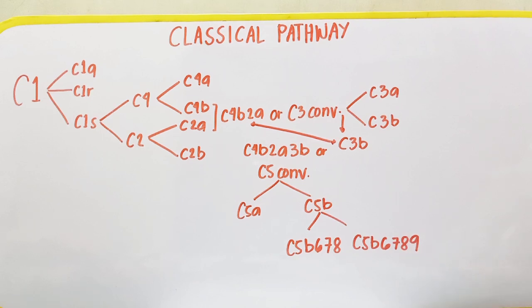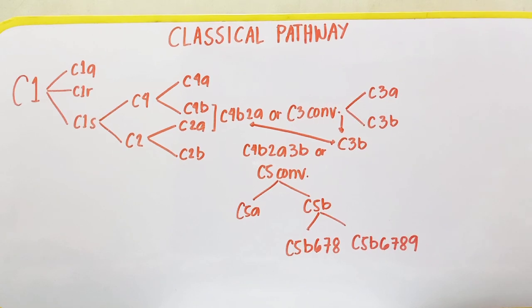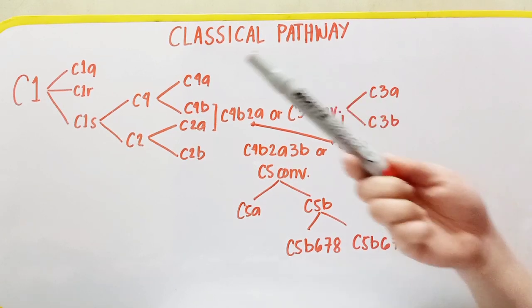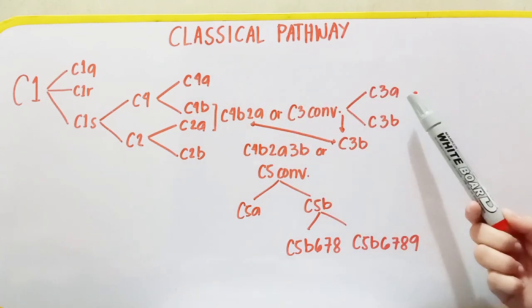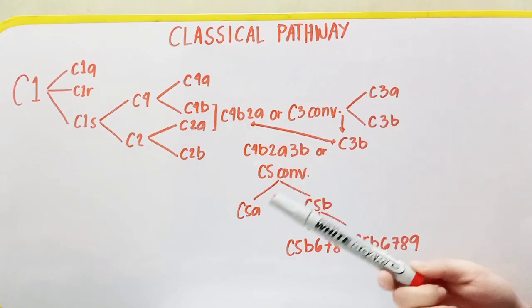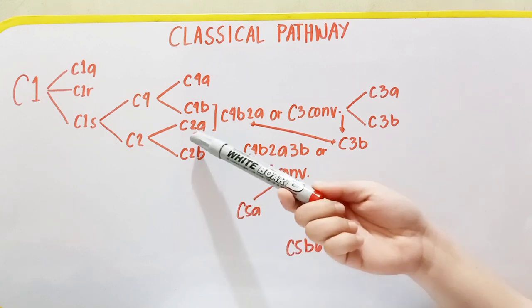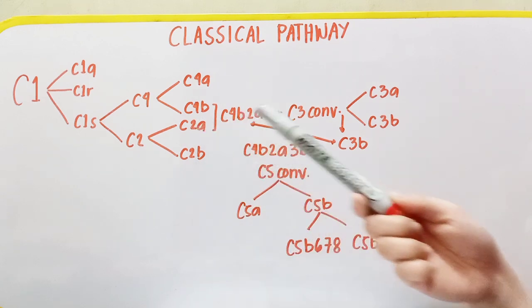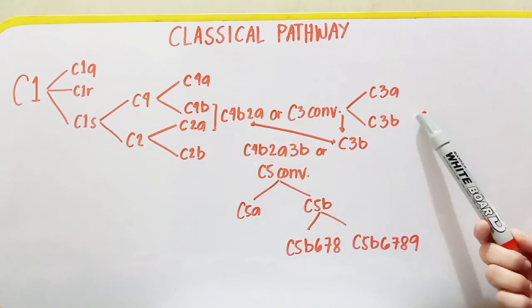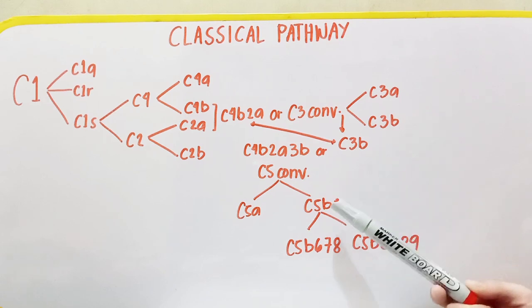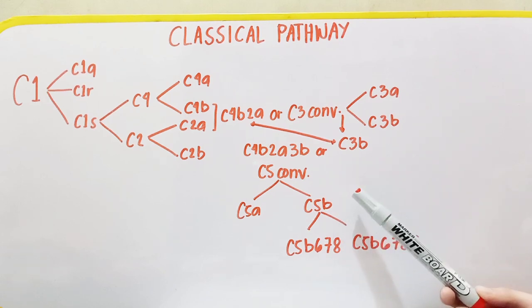To sum it up: the anaphylatoxins are C4A, C3A, and C5A. The major fragment is C2A, the opsonin is C3B, and the membrane attack complex is C5B.